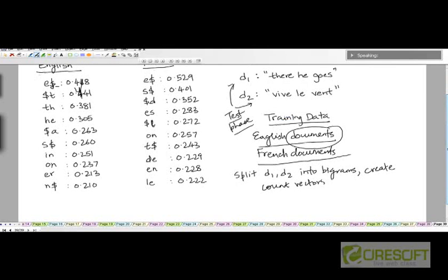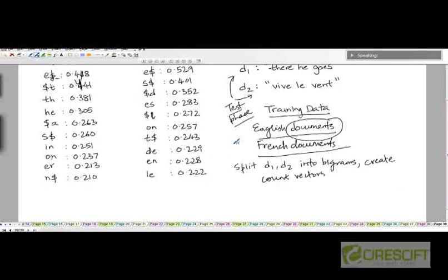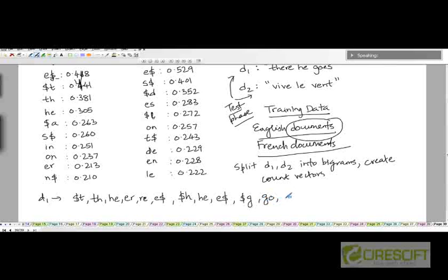So let's actually determine the vector for D1. Okay. So the bigrams you would see are dollar T, TH, HE, ER, RE, E dollar, dollar H, HE, E dollar, dollar G, GO, OE, ES, and S dollar.